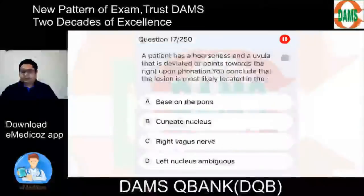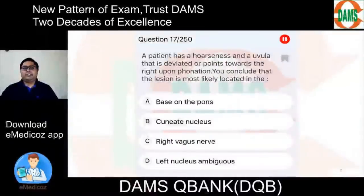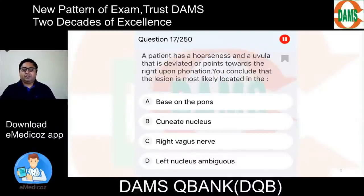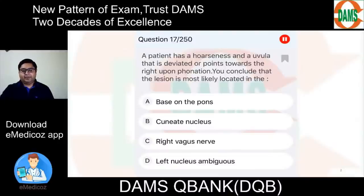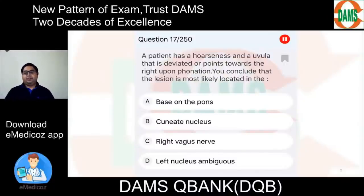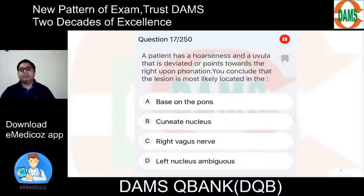The source of this question is the DEMS Question Bank and Clinical Beginner Series. The question says: a patient has hoarseness and the uvula deviates or points towards the right upon phonation. You conclude the lesion is most likely located where? Choices are: pons, cuneate nucleus, right vagus, or left nucleus ambiguus. Before coming to the answer, let us discuss the relevant anatomy.